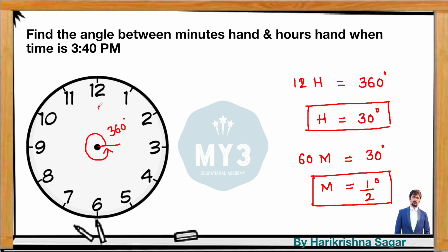For example, from 12 o'clock to 1 o'clock, that's 1 hour, so the angle is 30 degrees. From 12 o'clock to 3 o'clock, there are 3 hours of gap, so 3 × 30 = 90 degrees.